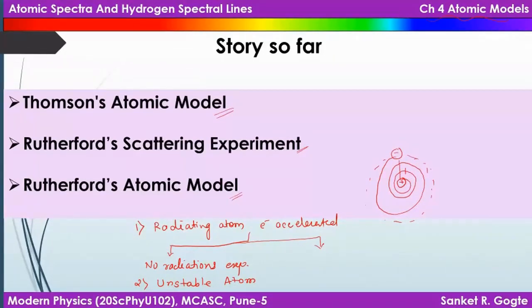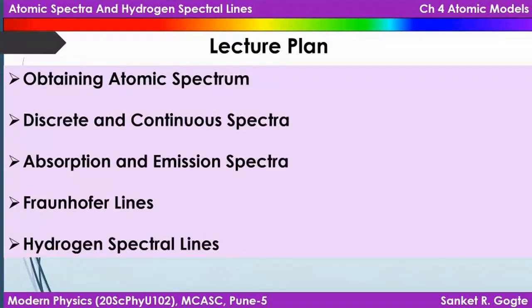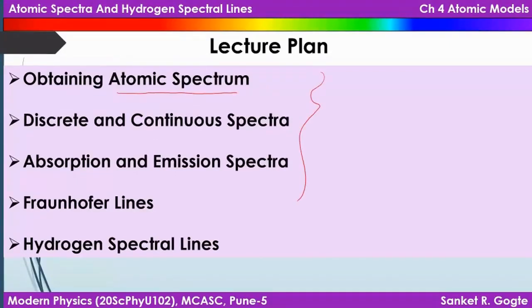In this lecture our plan is to discuss atomic spectra. We are discussing atomic spectra because when we observe them, the electromagnetic waves coming through that spectrum are emitted from an atom and therefore carry information about what kind of energies electrons have inside the atom. Observing the spectrum can tell us a lot about the energies of electrons in atoms. We will discuss various related topics regarding atomic spectra.